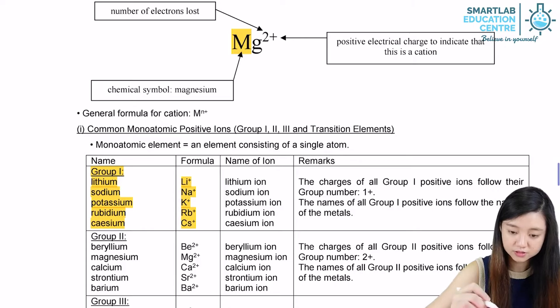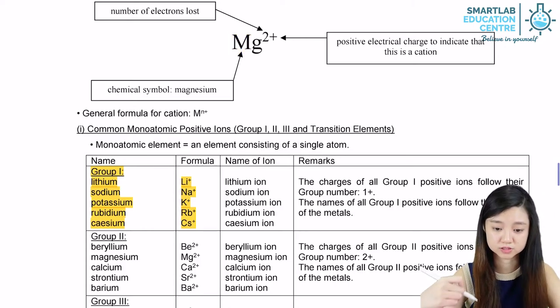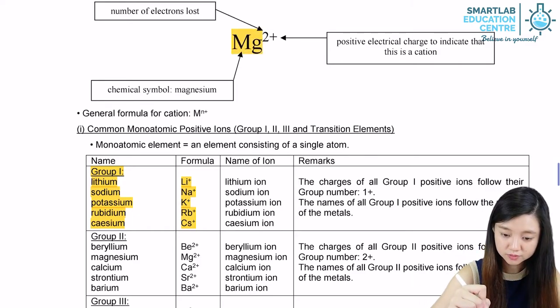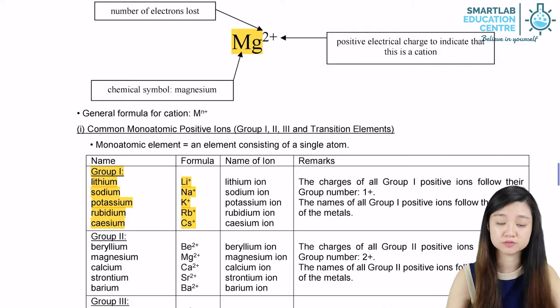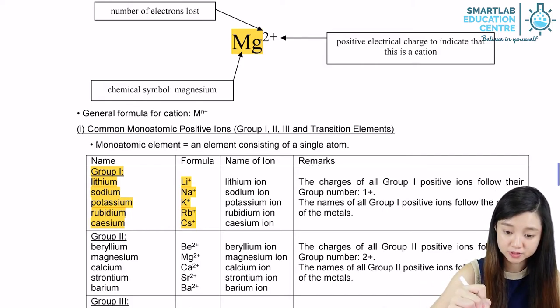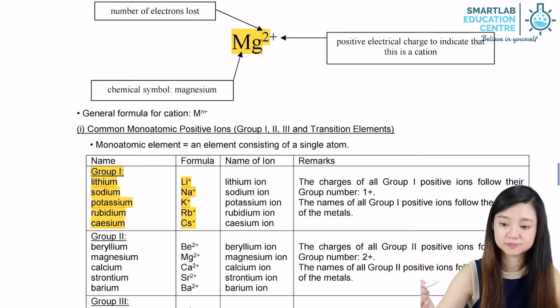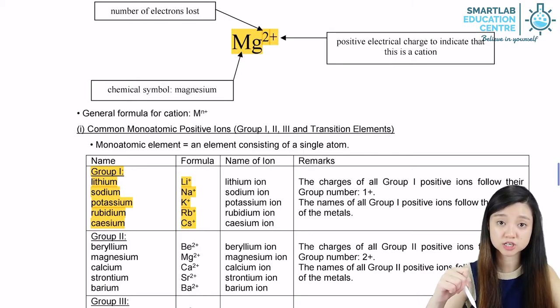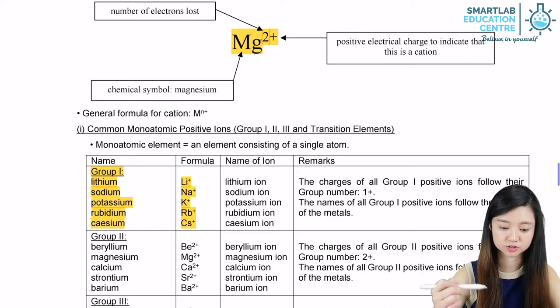When we write the formula of the cation, make sure we have the symbol of the cation written. And the number here actually will represent the number of electrons that are lost and the positive charge will represent that it is a cation. So in this case, for Group 1, it's just a plus 1 charge because they are only losing 1 electron.